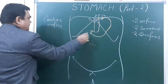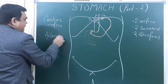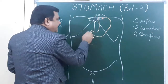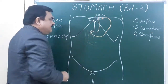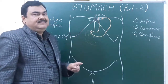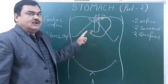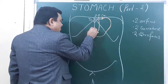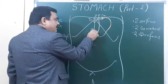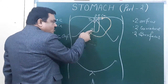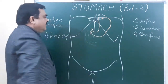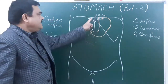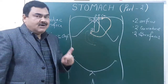The second orifice is the pyloric orifice. This orifice lies at the level of L1 vertebra, at the transpyloric plane, that means at the lower border of L1 vertebra, and about 1.2 centimeters right from the median plane. So we have two orifices: the cardiac orifice lying at the level of T11, and the pyloric orifice lying at the level of L1.